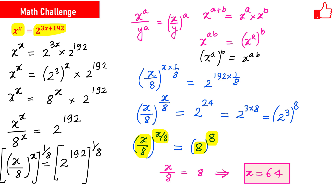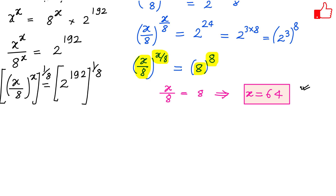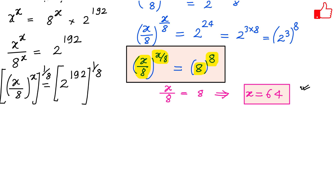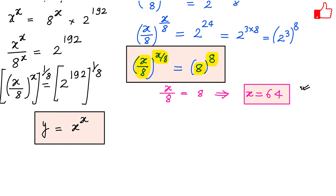But now the question is: does this equation have only one solution or multiple solutions? We need to verify that x equals 64 is the only solution. Let us investigate the function. We have x over 8 raised to the power x over 8 equals 8 raised to the power 8, so let us consider the function y equals x raised to the power x to check whether two roots are possible.